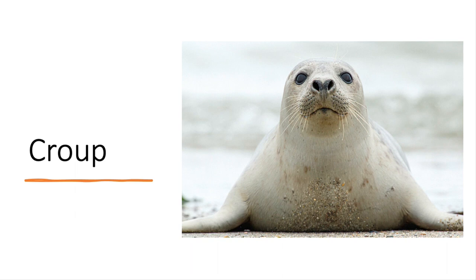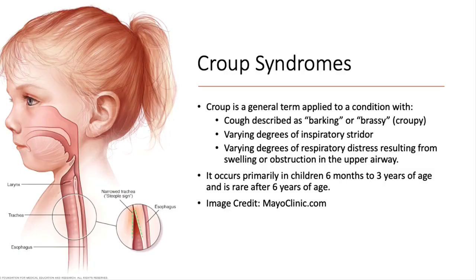Croup actually refers to many conditions that cause upper airway obstruction. Classically, croup is referred to as kids who have a barking or seal-like cough. Croup syndromes involve any condition that causes narrowing of the upper airway, as you can see in this illustration to your left. The resulting cough is usually inspiratory and is described as barking. Based on the degree of the obstruction of the airway, you may see other signs of respiratory distress as well, such as suprasternal or clavicular retractions.